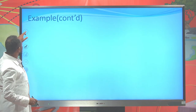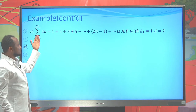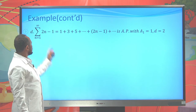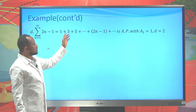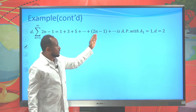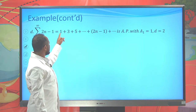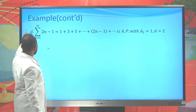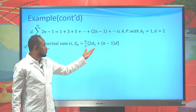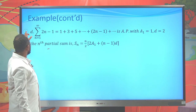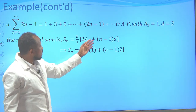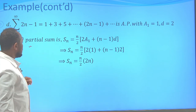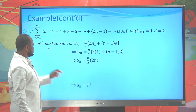Now let's look at another example: the sum of (2n − 1) where n starts from 1 to infinity. This gives 1 + 3 + 5 + ... It is an arithmetic sequence with first term 1 and common difference 2. Using the arithmetic series formula, S_n = n/2 × (2a1 + (n−1)d), substituting a1 = 1 and d = 2, we get S_n = n².